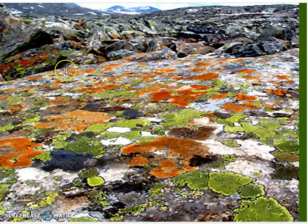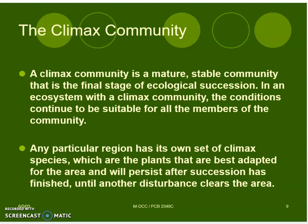Here is an area of bare rock that is covered in lichens. The climax community is a mature, stable community that is the final stage of ecological succession. In an ecosystem with a climax community, the conditions continue to be suitable for all the members of the community.